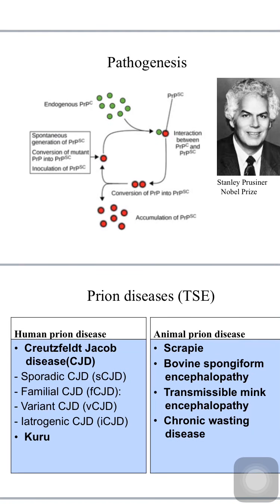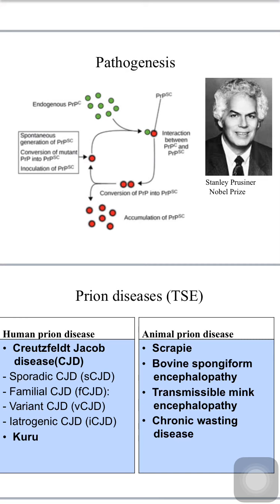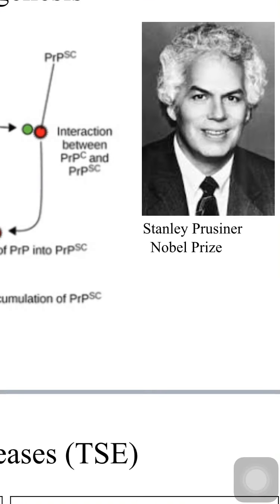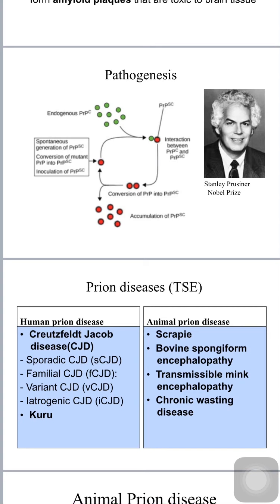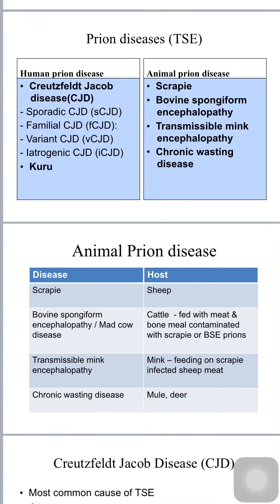In this context we must remember Stanley Prusiner, who won the Nobel Prize for explaining the mechanism of prion diseases. Prion diseases include animal forms — scrapie, bovine spongiform encephalopathy, transmissible mink encephalopathy, and chronic wasting disease — and human prion diseases, which include Kuru and Creutzfeldt-Jakob disease (CJD), comprising sporadic CJD, familial CJD, variant CJD, and iatrogenic forms.